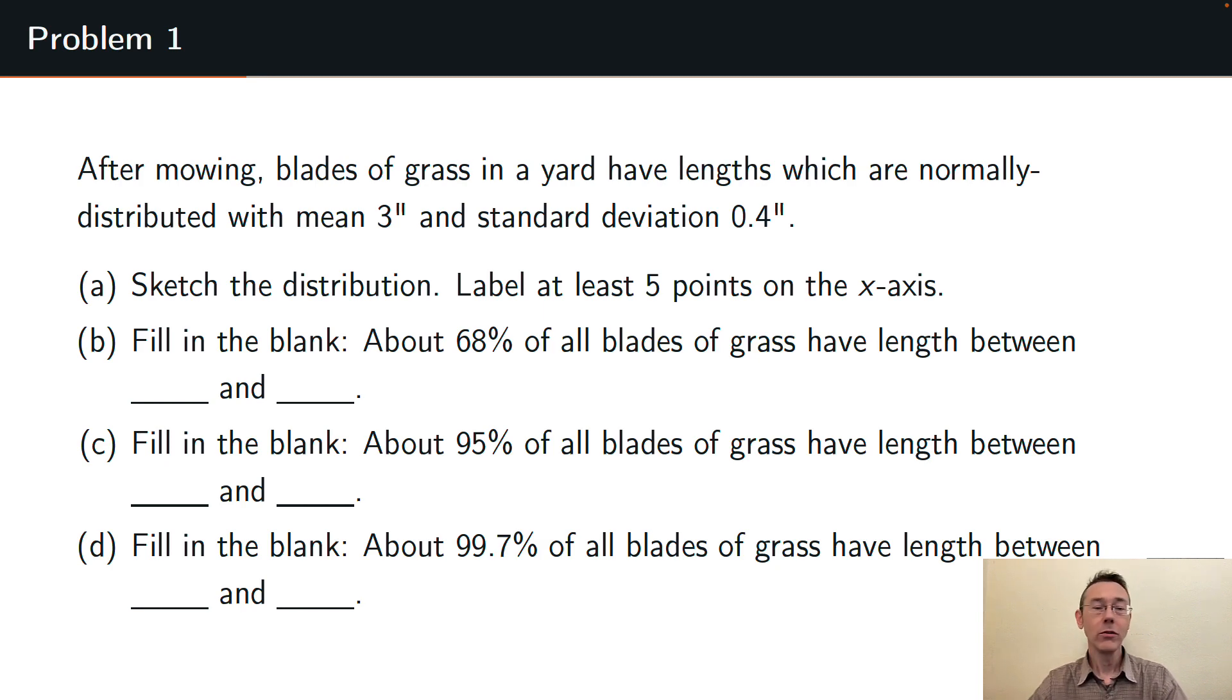First I want to sketch this distribution. I want to label at least five points on the axis and then I'm going to do a few problems here using the empirical rule. After that for problem 2 I'll get into some actual computations. I'll get into R and use pnorm.